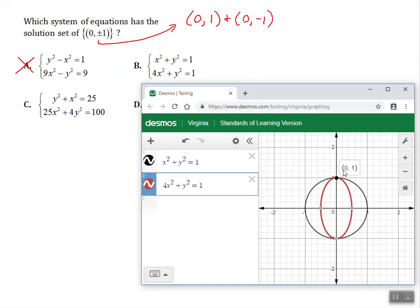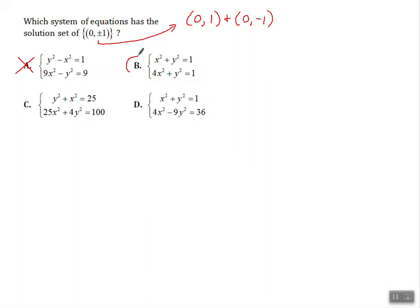Yep. And, aha, I see 0, 1 is one of our solutions. And I see 0, negative 1 is the other solution. So we've got our answer right there. It's answer choice B. So Desmos is pretty handy when we're trying to graph and look for the solutions to a system. I know answer choice B is our answer.